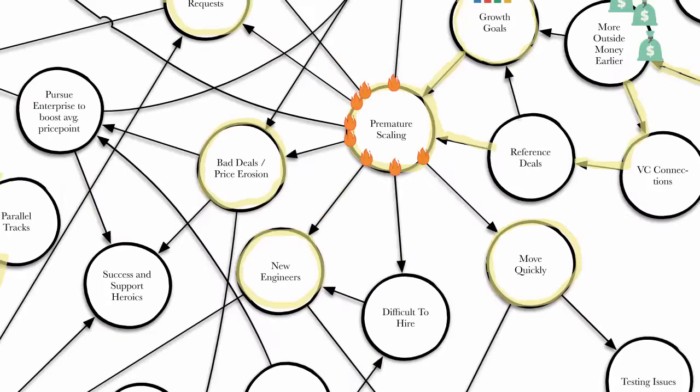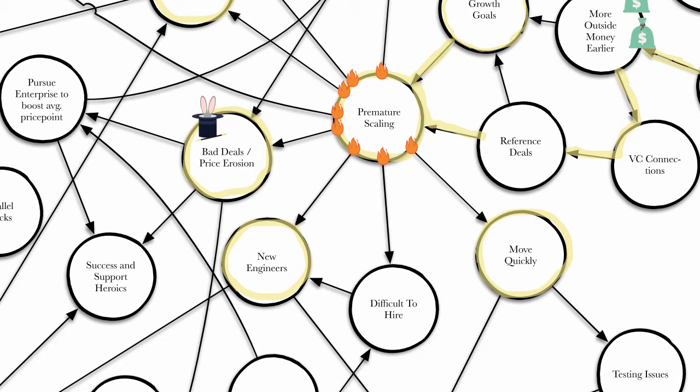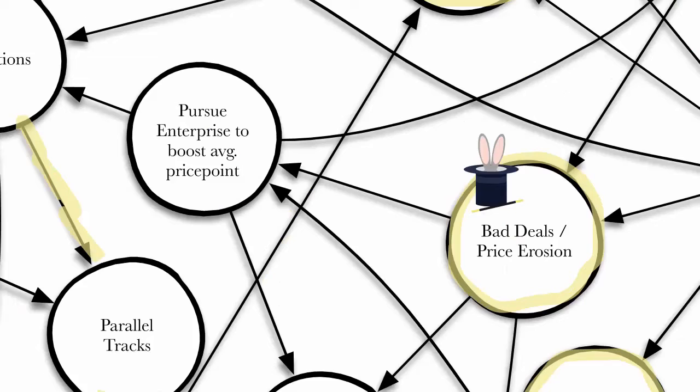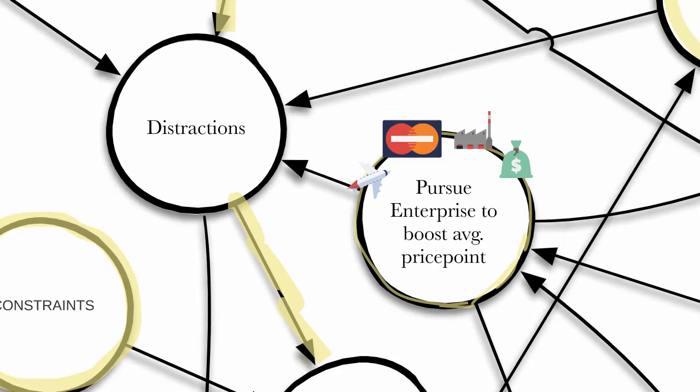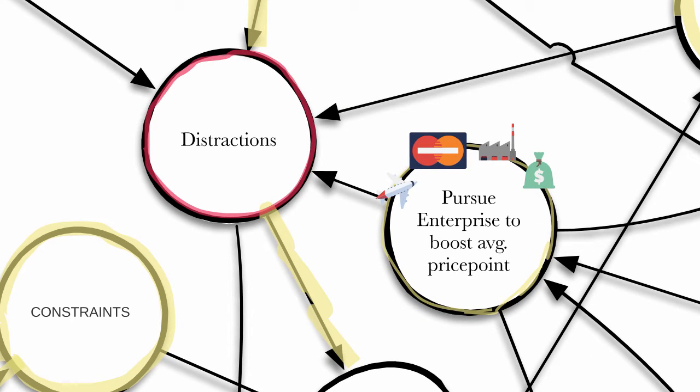Remember premature selling? And bad deals, price erosion? You will remember the next day. You'll remember exactly what the coffee tasted like. Because it's time to go after the enterprises. To boost that average price point and grow. Which causes distractions. And we know the rest of that story.